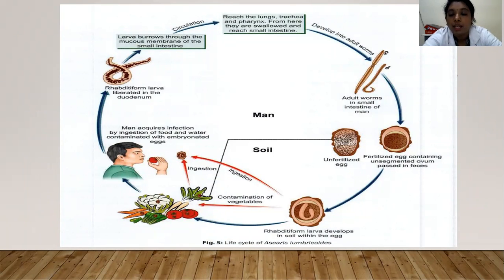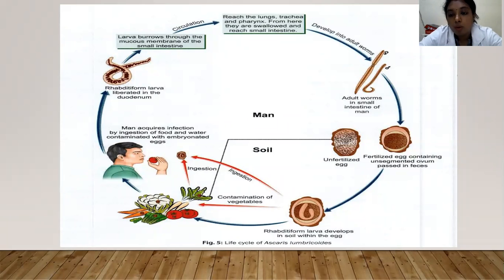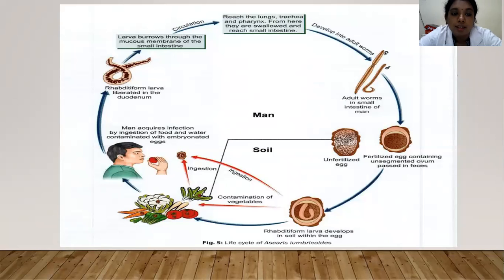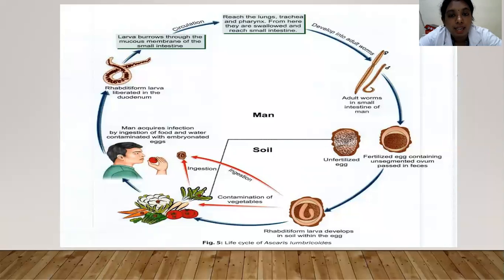In the diagram, the worms in the small intestine release fertilized and unfertilized eggs. The egg containing an unsegmented ovum passes in feces, and then in the soil a rhabditiform larva develops within the egg. Via contamination of vegetables or direct ingestion, man acquires infection by ingesting food and water contaminated with embryonated eggs. The rhabditiform larva is released from the egg in the intestine, burrows through the mucous membrane of the small intestine, enters the circulation, reaches the lungs, trachea, and pharynx. From here they ascend via the alveoli, are swallowed, reach the small intestine again, develop into adult worms, and the cycle repeats.